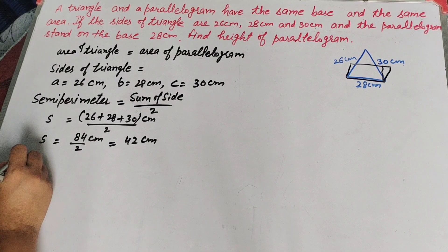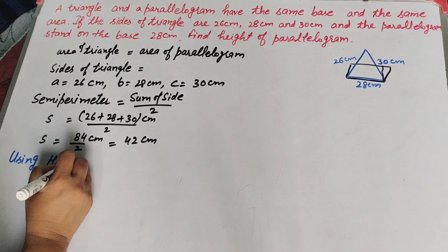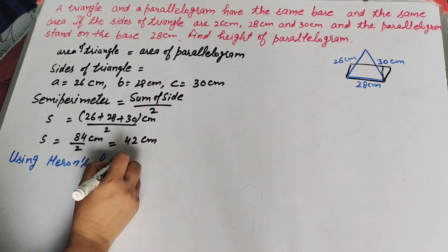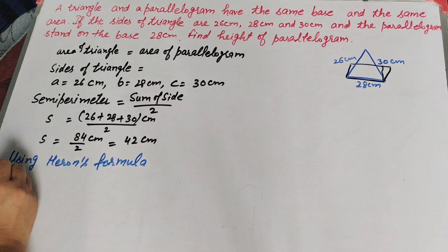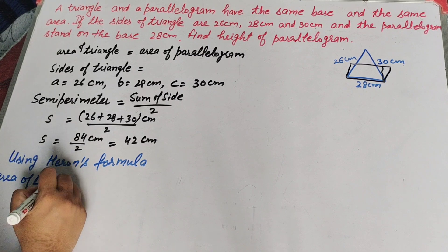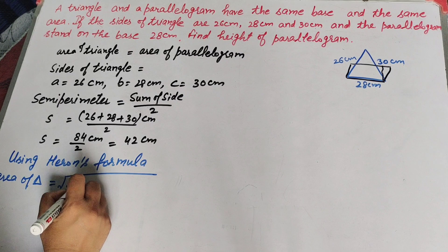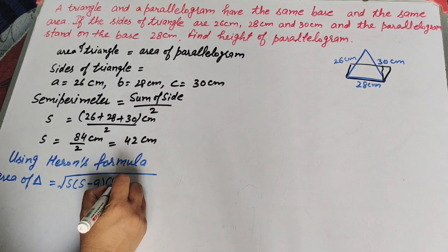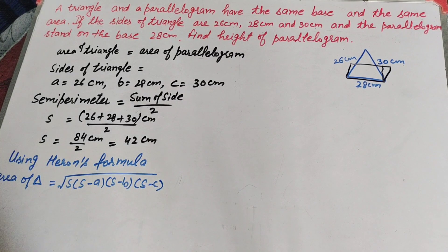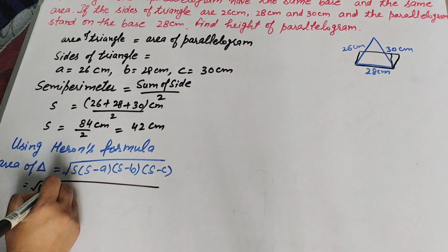Now we find the area of the triangle using Heron's formula: Area = √(s × (s−a) × (s−b) × (s−c)). Substituting s = 42: Area = √(42 × (42−a) × (42−b) × (42−c)).